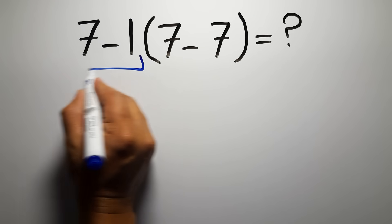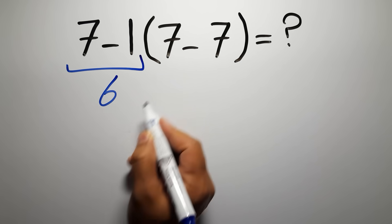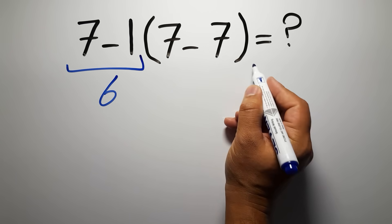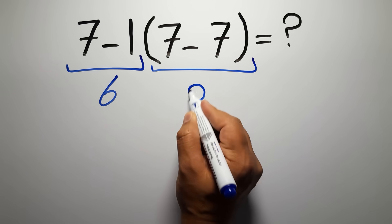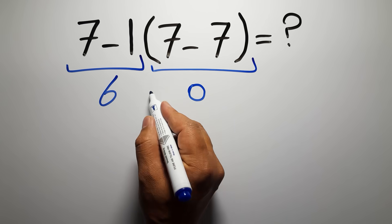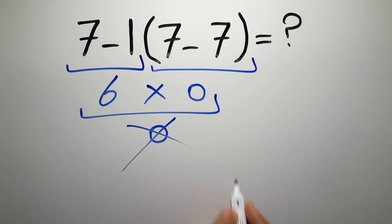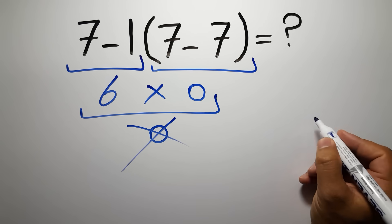7 minus 1 gives us 6. Inside these parentheses we have 7 minus 7 which equals 0, so 6 times 0 gives us 0. But this answer is not correct because according to the order of operations first we have to...